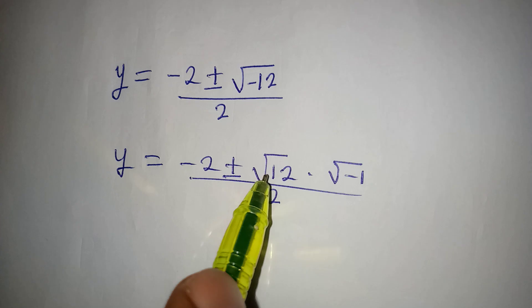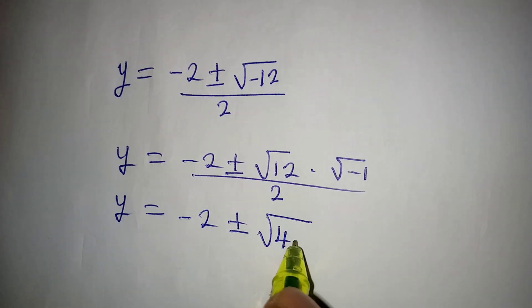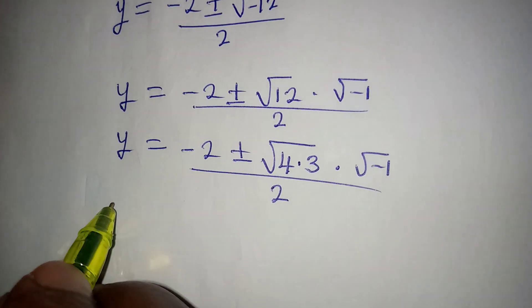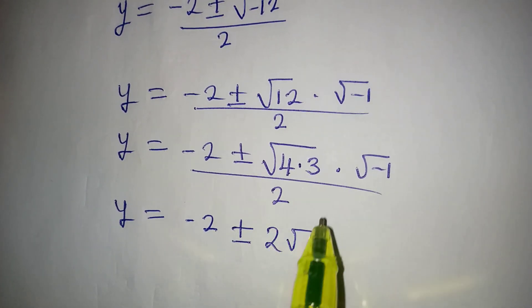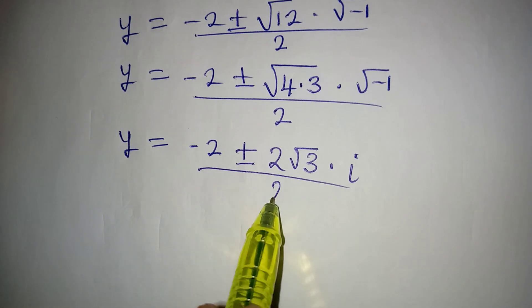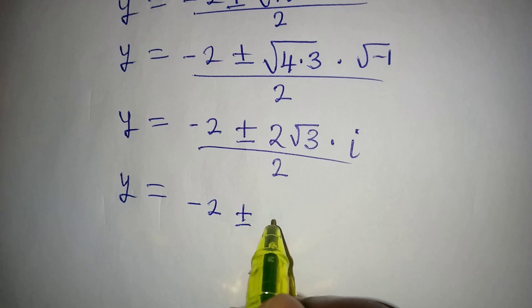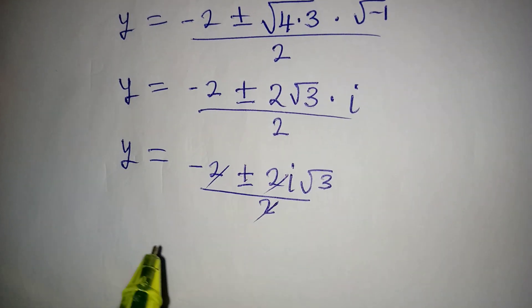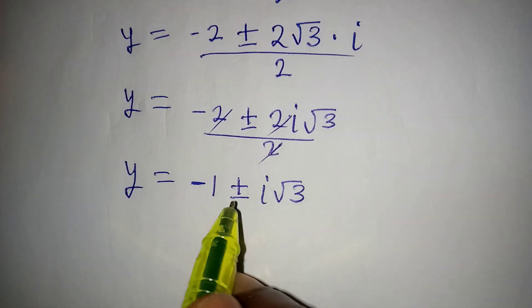Since 12 equals 4 times 3, and square root of 4 is 2, and square root of negative 1 is i, we have y equals minus 2 plus or minus 2i root 3, over 2. Dividing through by 2, y equals minus 1 plus or minus i root 3. This is a two-in-one solution giving us the two complex values of y.